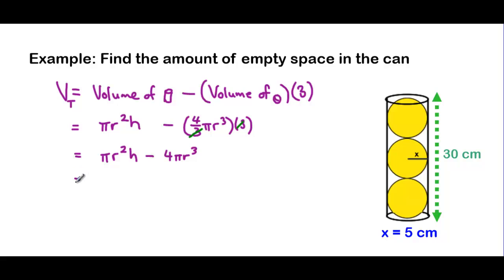We can now plug in our numbers. So π is a number. It's a rational number. So we'll write the symbol π. Our radius here is 5 centimeters. So 5² multiplied by the height of 30 centimeters. Then subtract 4 times π. And then r again is 5. And that is cubed.